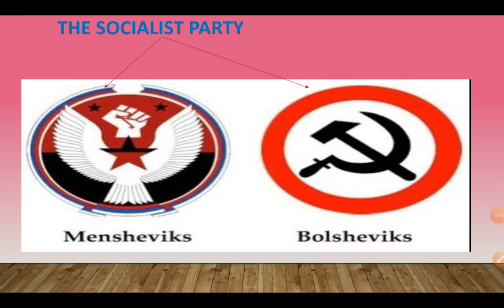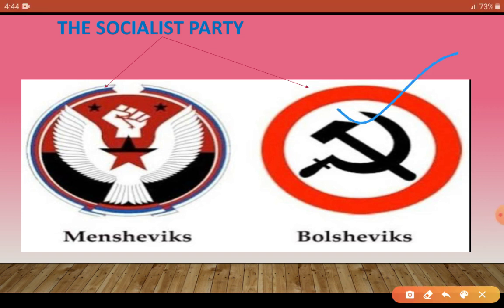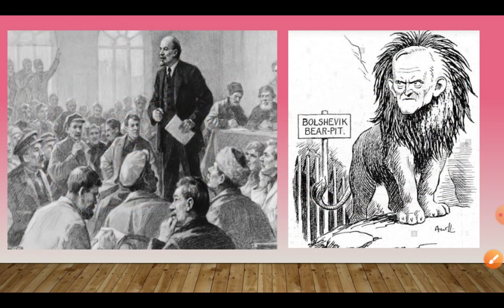Vladimir Lenin led the Bolshevik party. Lenin believed that the party should be disciplined and the quality and number of members should be controlled. But the Mensheviks wanted that when talking about socialism, they could not ban members based on quality — everyone should be most welcome, and whoever wanted to join the party should be allowed to join. The difference between Mensheviks and Bolsheviks kept growing.